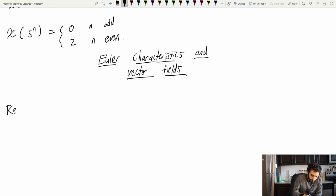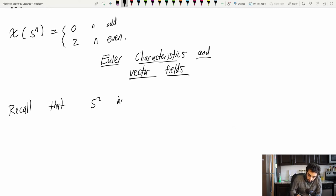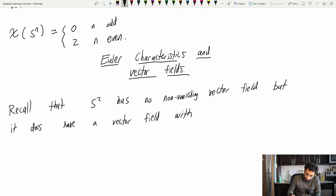So recall that S2 has no non-vanishing vector field. So we saw this in our talk on degree theory. But it does have a vector field with two zeros on it. That was this vector field. It has a zero on the top, a zero on the bottom, and then it was sort of this flow just from the top to the bottom.